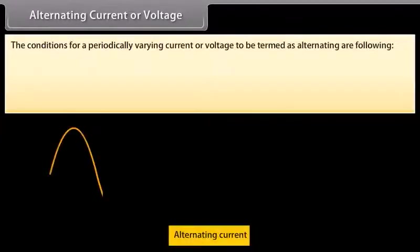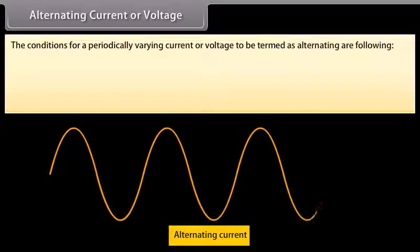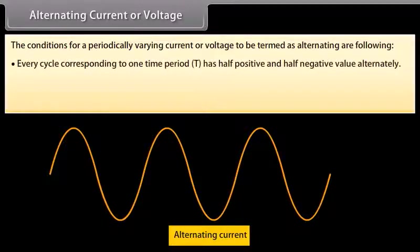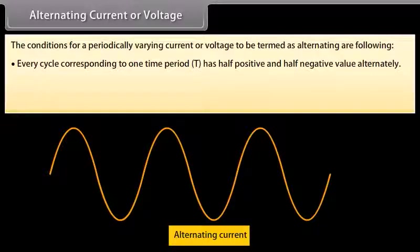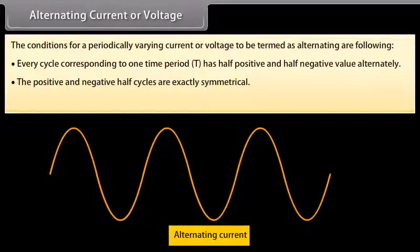The conditions for a periodically varying current or voltage to be termed as alternating are the following: every cycle corresponding to one time period has half positive and half negative value alternately. In case of current, it means that direction of current reverses after every half cycle. And in case of voltages, it means that the polarity of potential difference reverses after every half cycle. The positive and negative half cycles are exactly symmetrical.